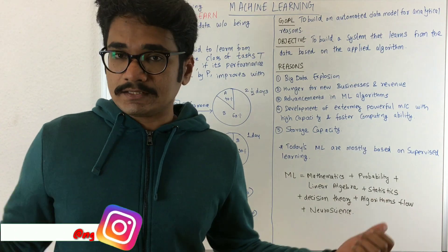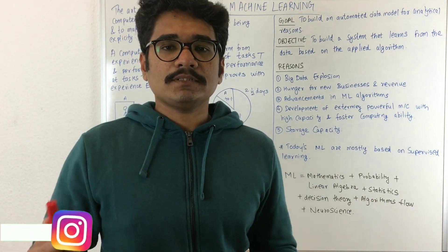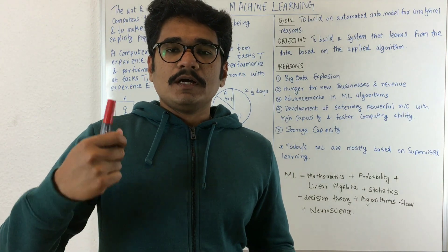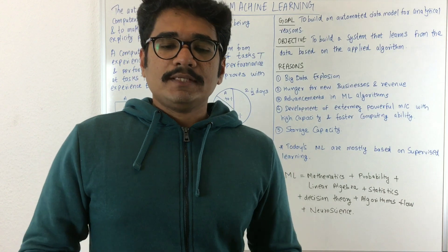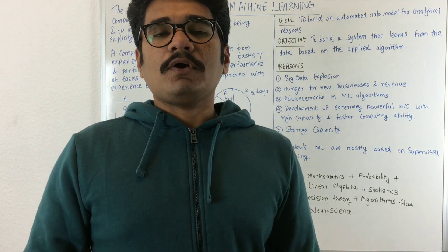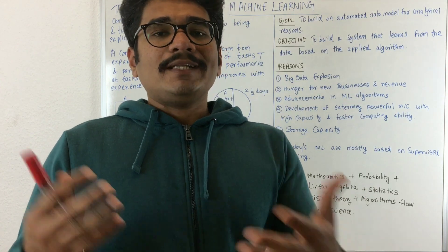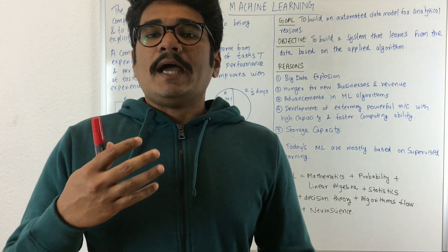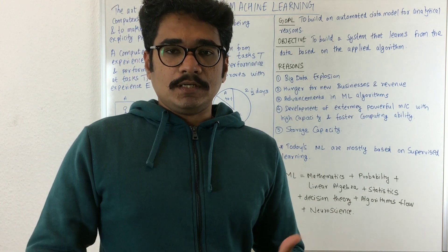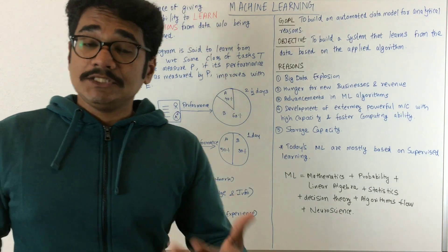We start with the name itself: machine and learning. Learning in its original sense means you need to adapt to certain things. For example, if you drive a car, you first learn how to operate that car, where the brake is, where the clutch is, and where the accelerator is, so you can drive that vehicle.